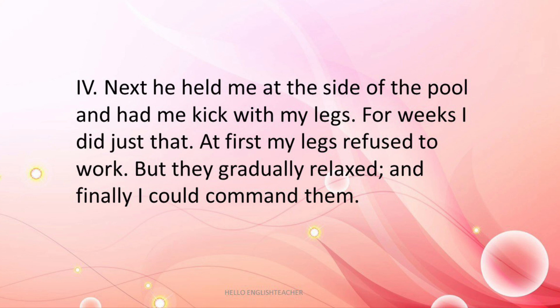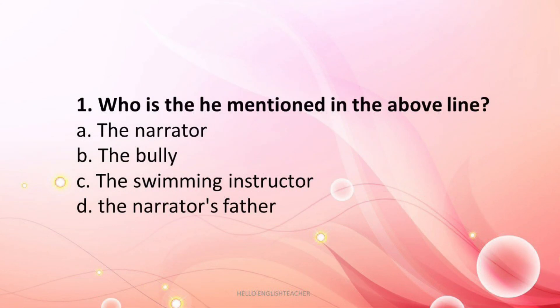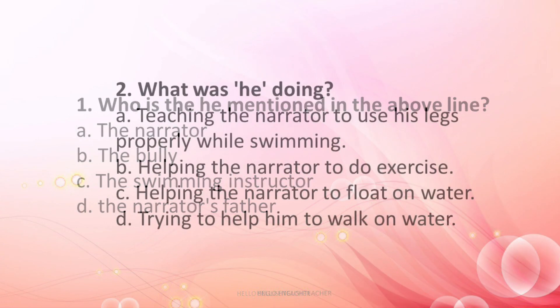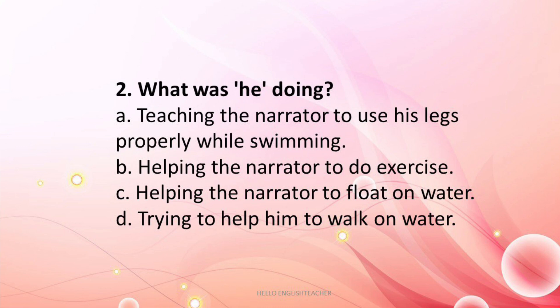Paragraph 4: 'He held me at the side of the pool and had me kick with my legs. For weeks, I did just that. At first, my legs refused to work. But they gradually relaxed and finally, I could command them.' Question 1: Who is the 'he' mentioned in the above lines? The answer is C — the swimming instructor. Question 2: What was he doing? The answer is A — teaching the narrator to use his legs properly while swimming.